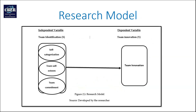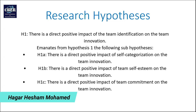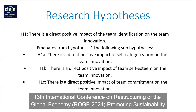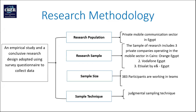As shown in this figure, the research model includes the independent variable, which is team identification, and its sub-dimensions: self-categorization, team self-esteem, and team commitment; and the dependent variable, which is team innovation. According to this model, the hypothesis is that there is a direct positive impact of team identification on team innovation.